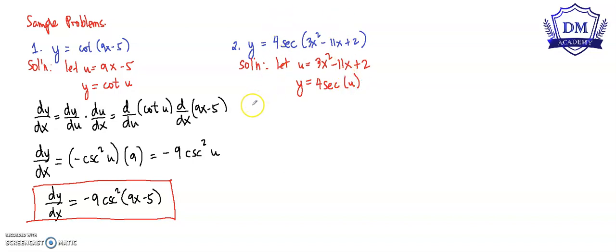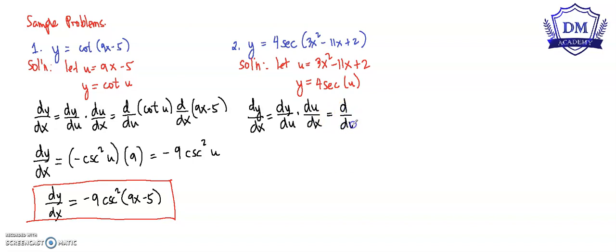Using the chain rule, we have dy over dx equal to the derivative of y with respect to u multiplied by the derivative of u with respect to x. That is d over du of 4 secant u, multiplied by d over dx of 3x squared minus 11x plus 2.